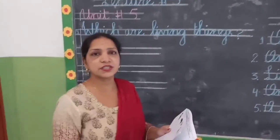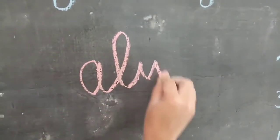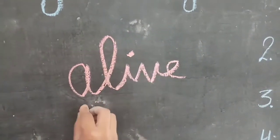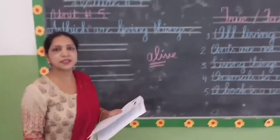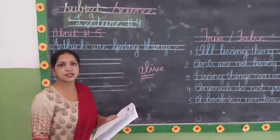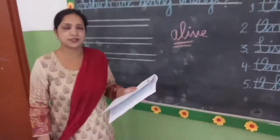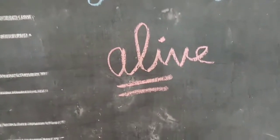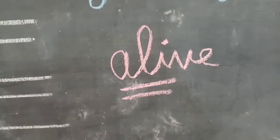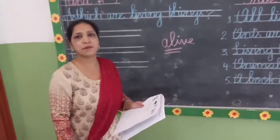Today we are going to discuss which are living things. Living things — aisee cheezze hootie hain joo ke alive hootie hain. A-L-I-V-E. Alive. Yarni ke zinda hootie hain. Joo ke jaan rakti hain, saans leetii hain, khaa sakti hain, bhaar sakti hain, aur ek juggah se dhusri juggah pe jaa sakti hain.